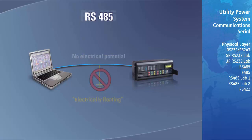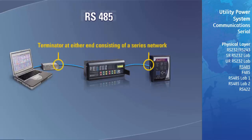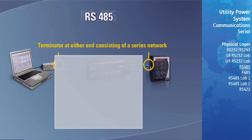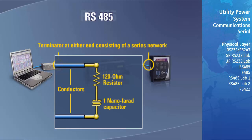Let's look at the connection of several GE Multilin relays and a computer to an RS-485 LAN. For this example, the recommended cable Belden 9841 is terminated at each end with a series network. It's important to correctly terminate the cables to ensure data is received error-free. This series network consists of a 120-ohm resistor and a 1 nanofarad capacitor.